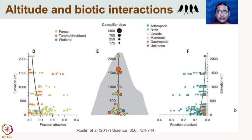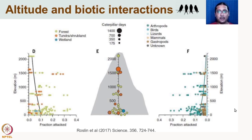Biotic interactions also vary with elevation. The same model caterpillar experiment shows that predation is highest at the lowest elevations and declines with increasing elevation. If biotic interactions are very high at low elevations, they may keep population sizes small, reduce competition, and promote coexistence — similar to the mechanism proposed for the latitudinal diversity gradient.